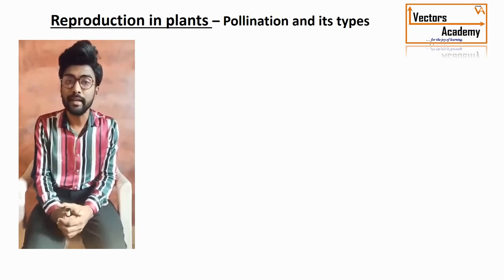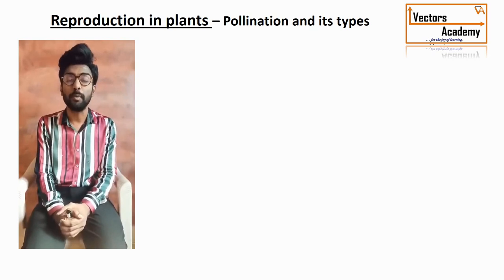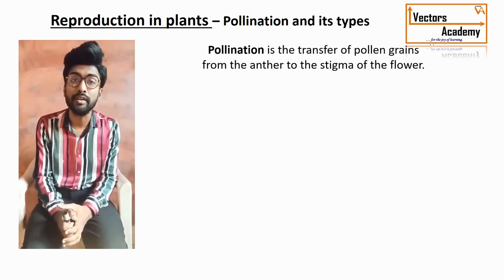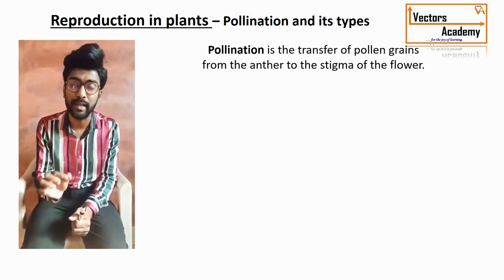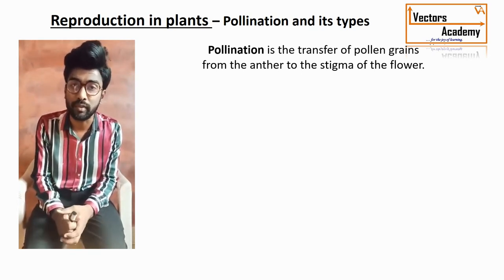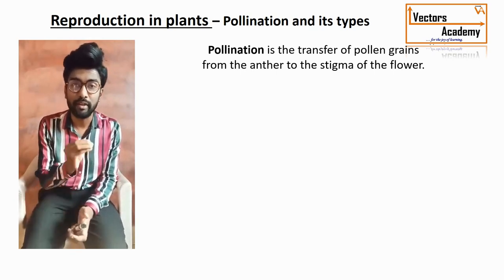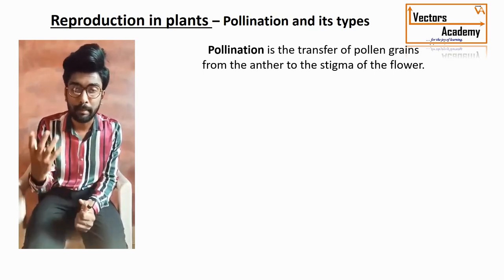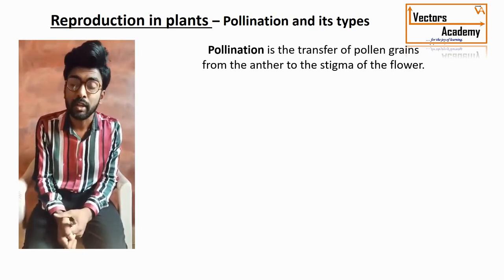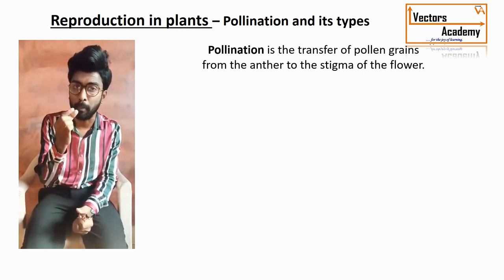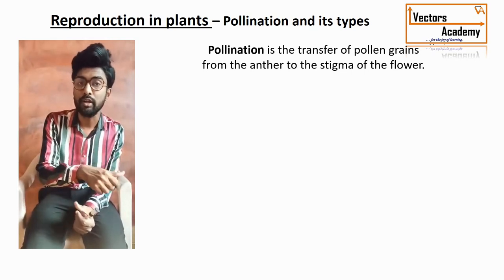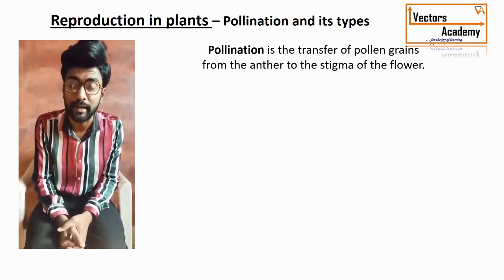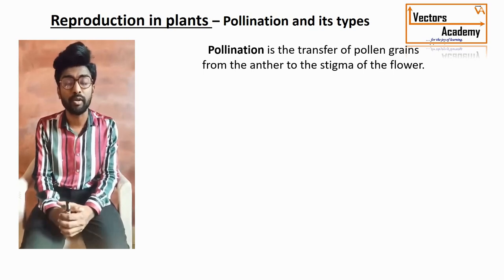What exactly is pollination and how does it take place in the angiospermic plant? Pollination is a process where there is a transfer of pollen grain from the anther to the stigma of the respective flower. The anther is the male part and the stigma is the female part. This transfer process is generally called pollination.